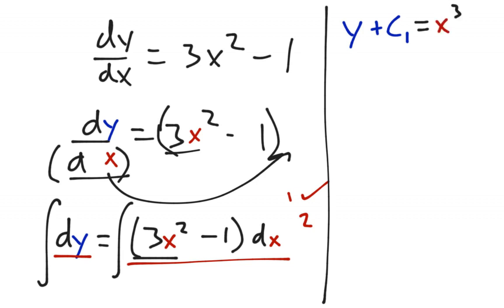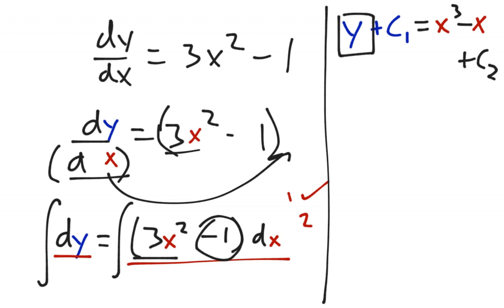And then I have a minus, and the integral of minus 1 — I throw the x back. So I'm going to have x cubed minus x, and there's going to be a plus a different c. To solve the differential equation, the goal is to get y by itself. I'm almost done — I just have to subtract c1.